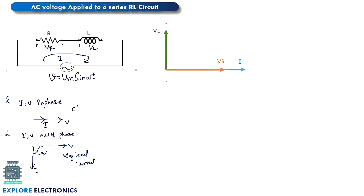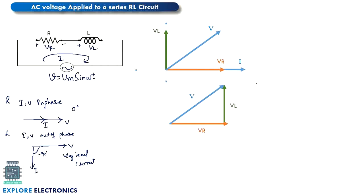Now the total voltage V we are applying — if we plot the total voltage vector it will be in this direction. Using this phasor diagram we can write the voltage triangle using VR and VL. By looking at this, the hypotenuse V can be written as the square root of VR² + VL². This is simply by applying the Pythagorean theorem.